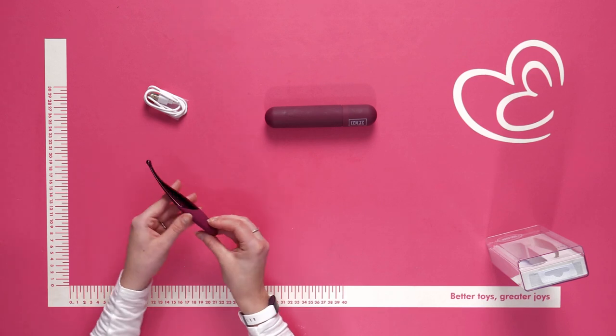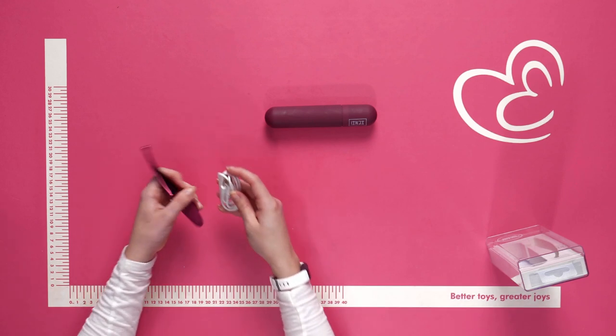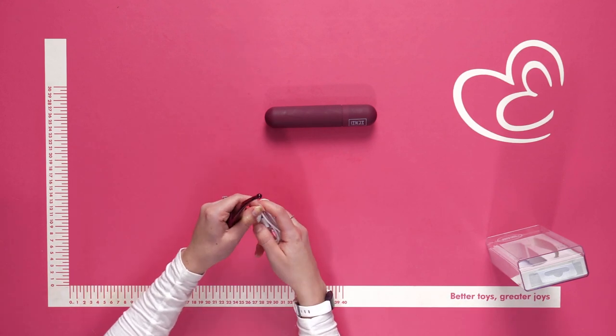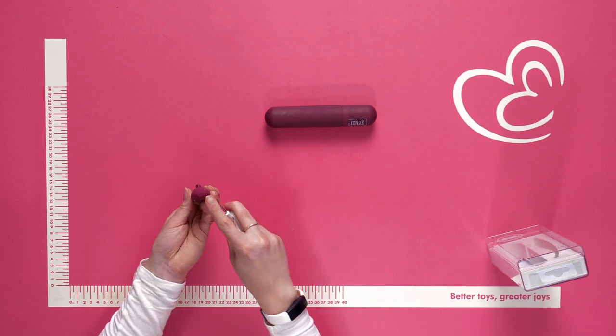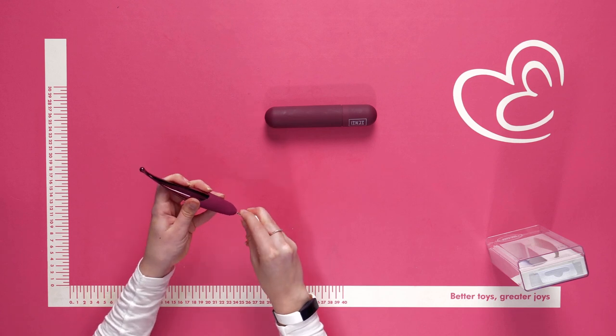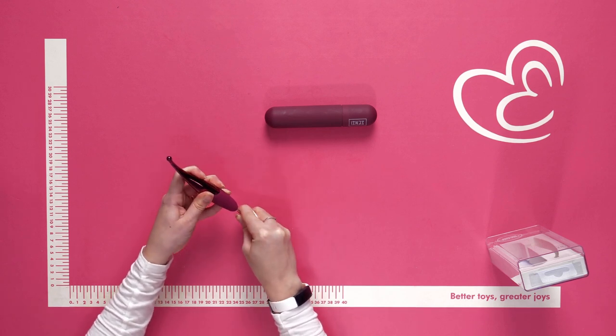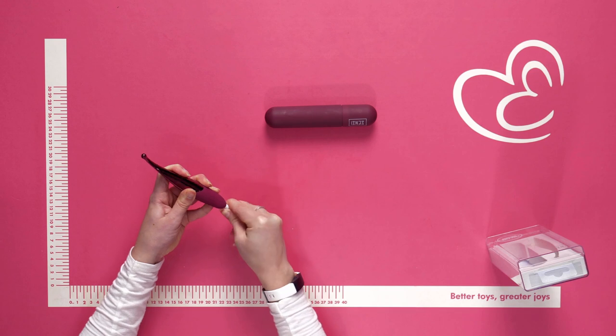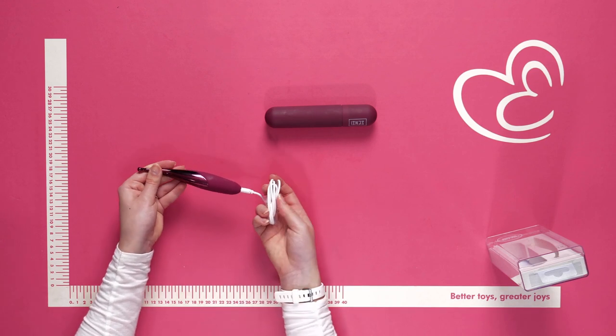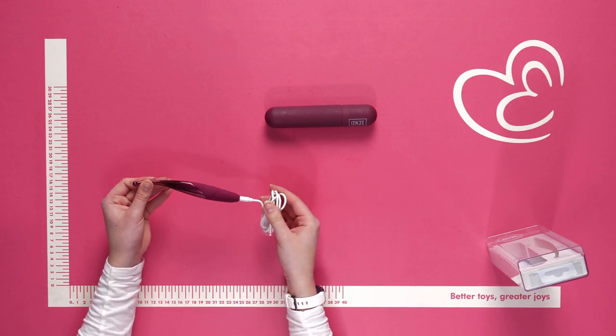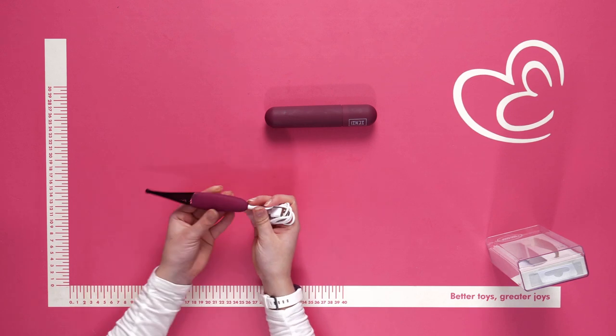It's also very simple and easy to charge using your USB charging cable. The charging point is located at the very bottom of the toy. Gently push in like so, push through the silicone—this will not damage the toy—and it will begin to charge for you.